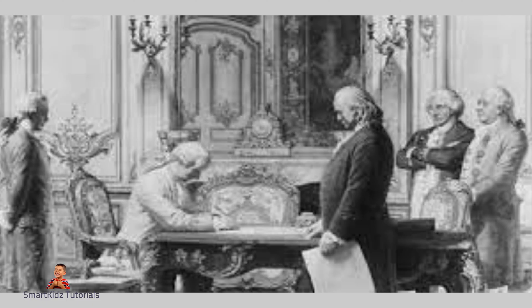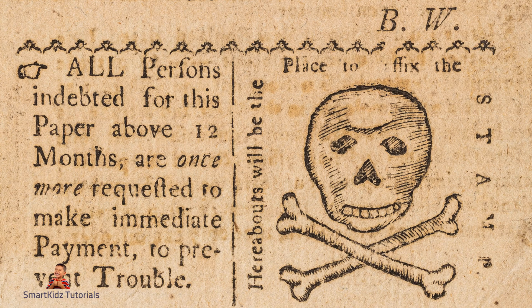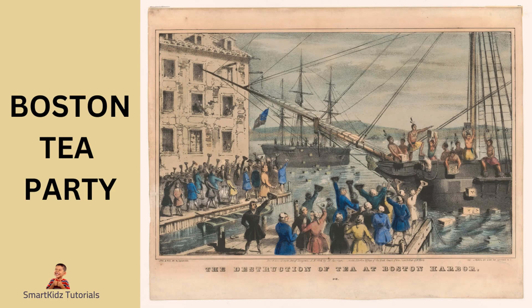Here are some key moments from the war explained in simple words. The Stamp Act: In 1765, the British government imposed a tax on all paper goods in the colonies. This angered the colonists because they had no say in the decision-making process — they believed that only their own elected representatives should have the power to tax them. The Boston Tea Party: In 1773, colonists in Boston, Massachusetts, protested against the British government's monopoly on tea trade. They disguised themselves as Native Americans and dumped crates of British tea into the Boston harbor, showing their growing resistance to British rule.